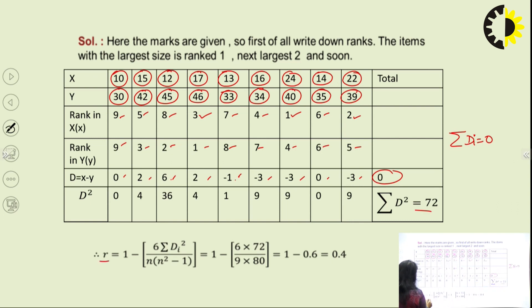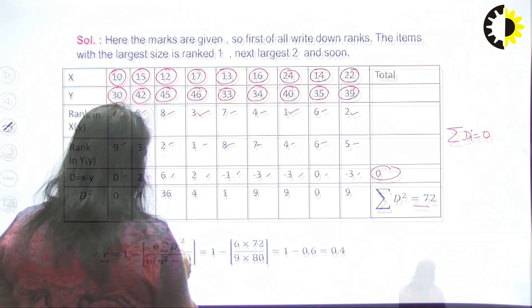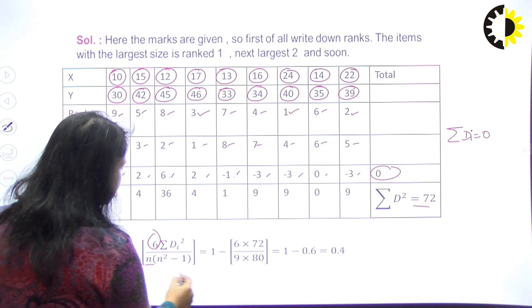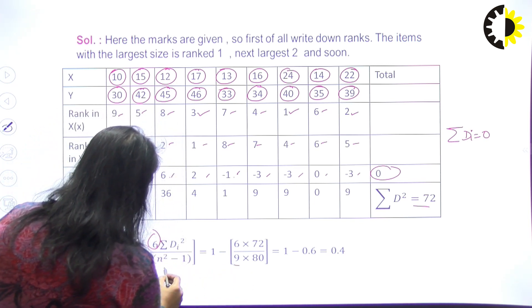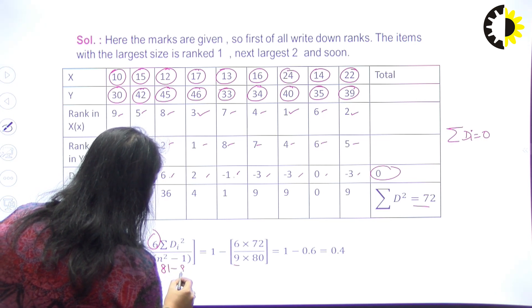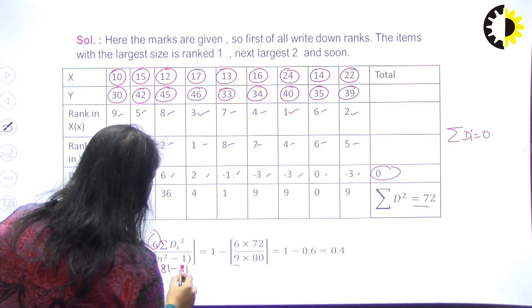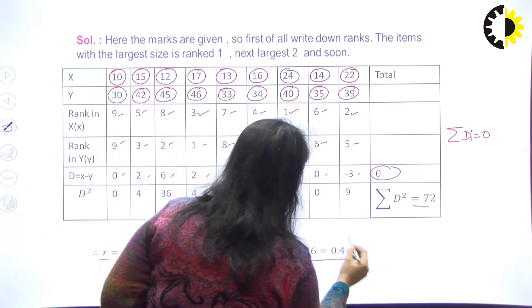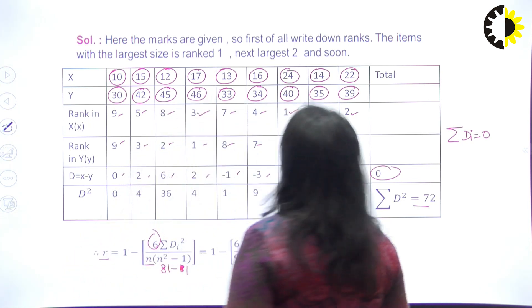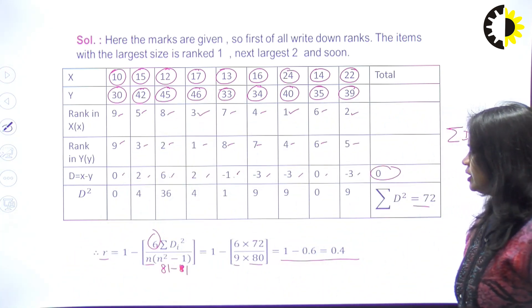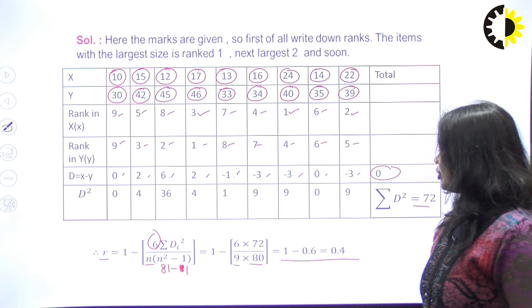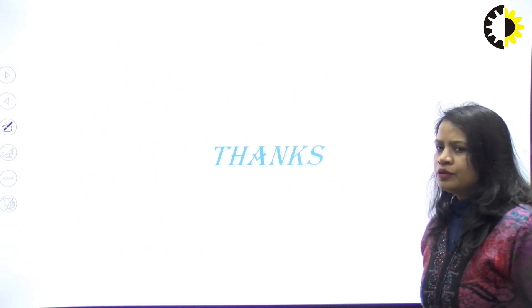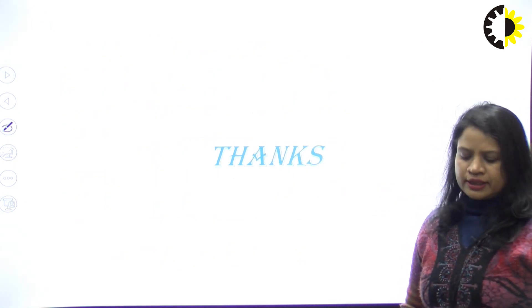Substituting into the formula: ρ = 1 − 6×72 / [9×(81−1)] = 1 − 432/720 = 0.4. Therefore, the two variables x and y have a rank correlation of 0.4, meaning they are 40% related by rank. Thank you, I hope this session is useful and clear to you.